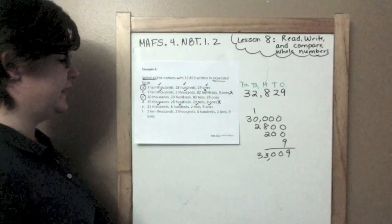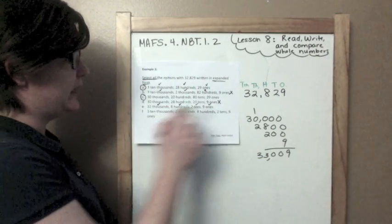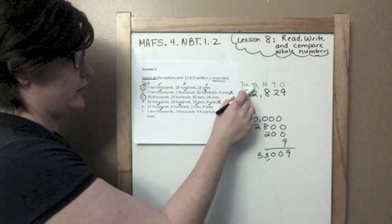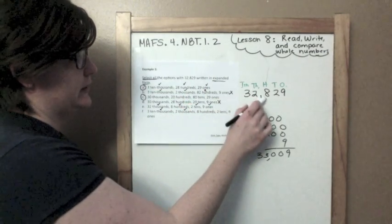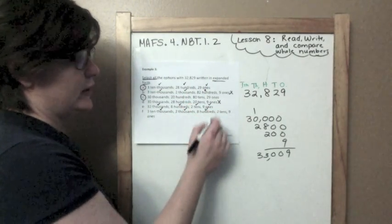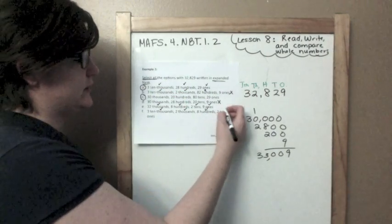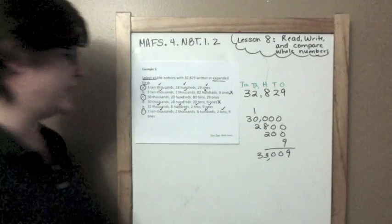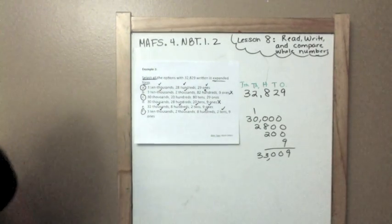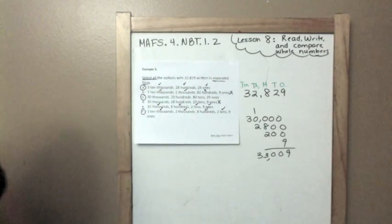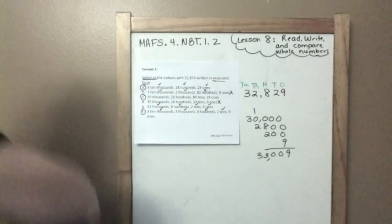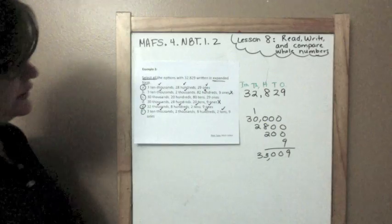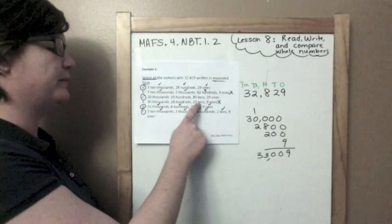And finally, F. Three ten thousands, yes. Two thousands, yes. Eight hundreds, eight hundreds, yes. Two tens, two tens, yes. Nine ones, nine ones, yes. So, our correct answers here are A, C, and D. Oh, I forgot to pick E, too. It's a good thing I went back to check. Right. D as well, because I marked them all right.